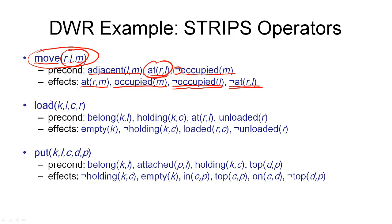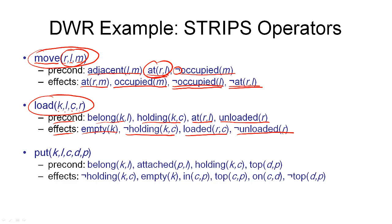The second example is the load operator: loading with crane K at location L, loading container C onto robot R — four arguments in total forming the operator name. There are no negative preconditions for this operator. The positive preconditions are that the crane must belong to that location, the crane must be holding the container to load it onto the robot, the robot must also be at that location, and the robot must be unloaded. The effects are that the crane will be empty after loading, it will no longer hold the container, the container will be loaded onto the robot, and the robot will no longer be unloaded.